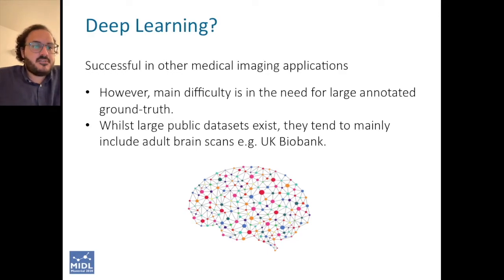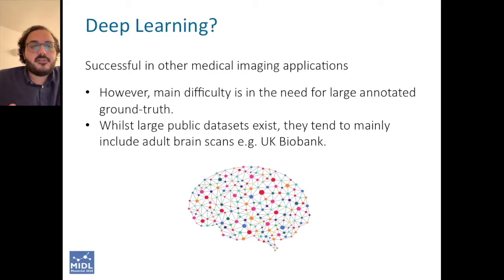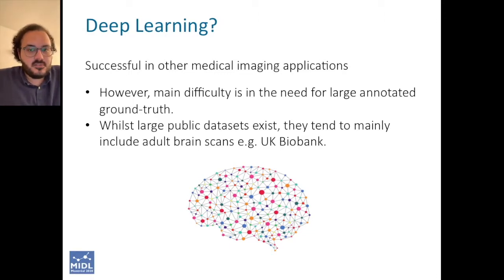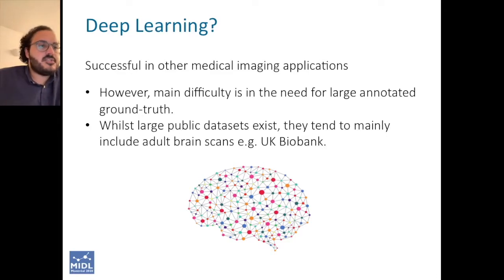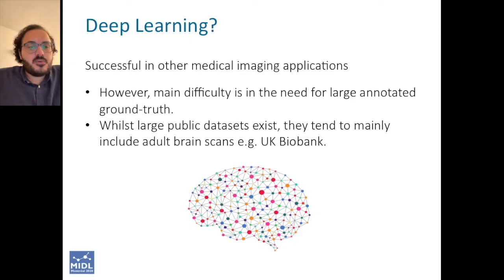However, deep learning is very data hungry and will require lots of manually annotated images for training — ideally hundreds of slices from different gestational ages — and there aren't really large public datasets that we can leverage to avoid the issue of ground truth.